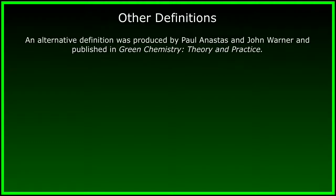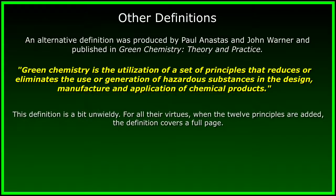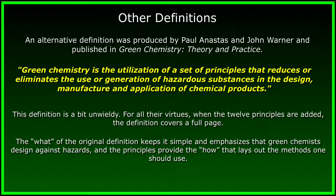There are other definitions of Green Chemistry. The most important of these is an alternative produced by Paul Anastas and John Warner, published in their classic book Green Chemistry: Theory and Practice. According to this definition, Green Chemistry is the utilization of a set of principles that reduces or eliminates the use or generation of hazardous substances in the design, manufacture, and application of chemical products. This definition is a bit unwieldy — when the twelve principles are added to characterize the definitional statement accurately, the resulting definition covers a full page. It's really a case of the what — the original definition that keeps things simple and emphasizes that green chemists design against hazards — and the how — the principles that lay out how one should proceed in practicing green chemistry.